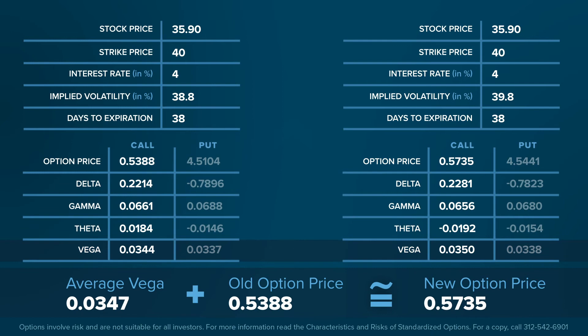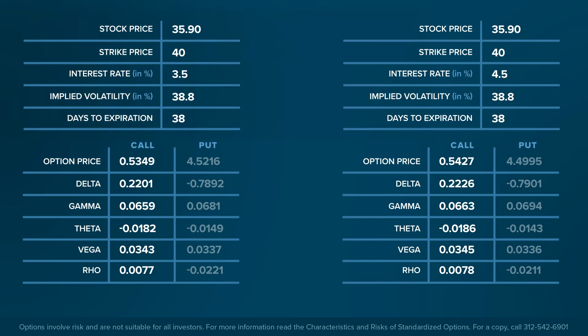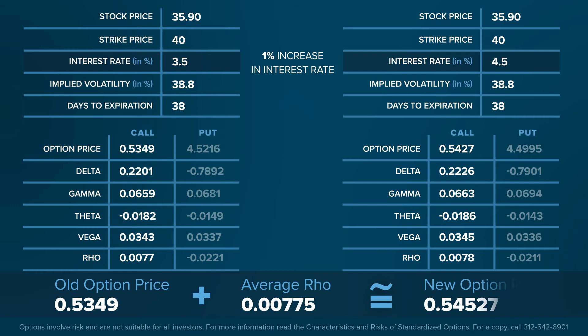Rho represents an option's price sensitivity to interest rates. The greater the underlying asset price and remaining days to expiration, the greater the Rho. For example, if the interest rate were to rise from 3.5% to 4.5%, the average value of Rho would approximate the change in the option's price. Change the model inputs on the options calculator and click Calculate to better understand the impact on Rho.